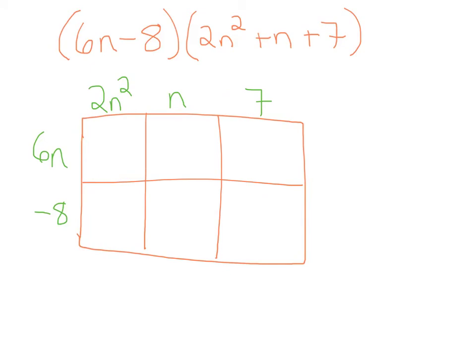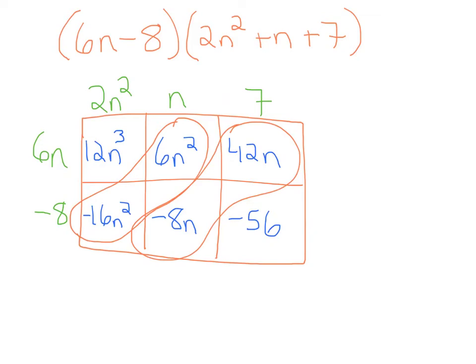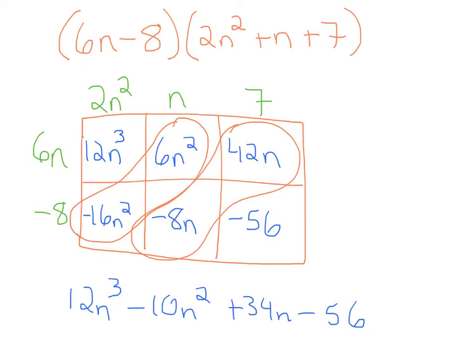Here is the second example using the box method: 6n minus 8 times the trinomial 2n squared plus n plus 7. I've set up the box for you, so pause the video and try it on your own. After you fill in the box and combine like terms, you should get 12n cubed, then minus 10n squared, then plus 34n, and then minus 56 at the end.